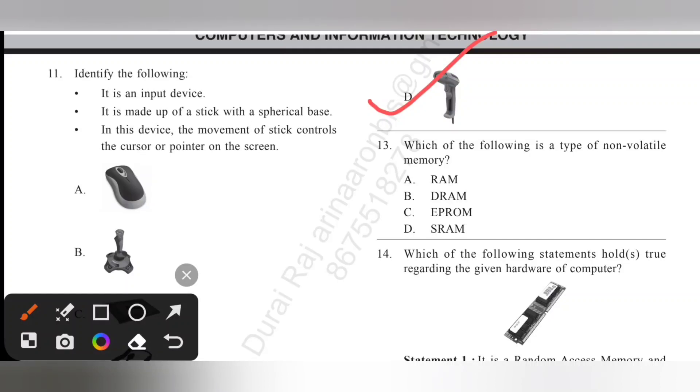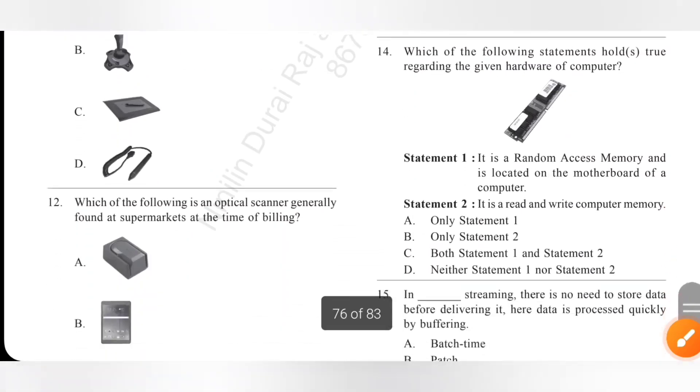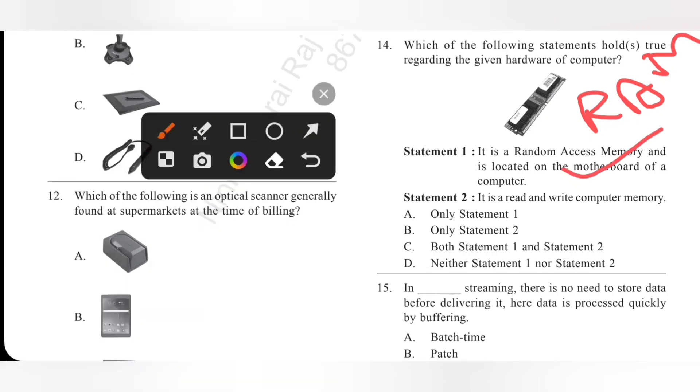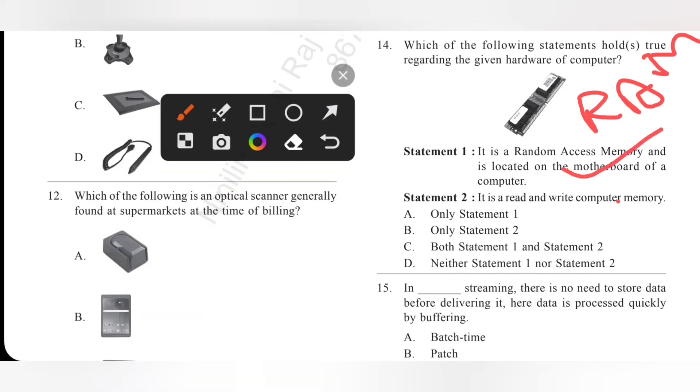Thirteenth one, which of the following is a type of non-volatile memory? We know ROM is a non-volatile memory. EEPROM, erasable programmable read-only memory. Option C is the correct answer. Next one, which of the following statements hold true regarding the given hardware of computer? The given hardware is RAM, random access memory. Statement one: it is located on the motherboard of a computer. Yes, correct. Statement two: it is a read and write computer memory. Also correct. So both statement one and two. Option C is the correct answer.